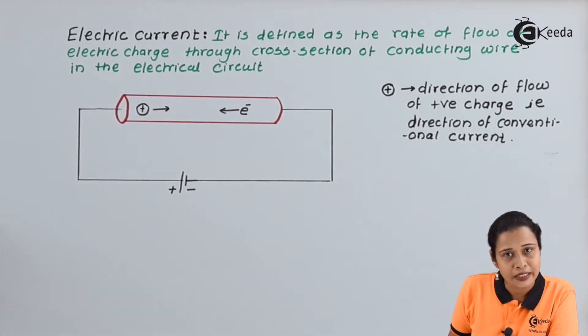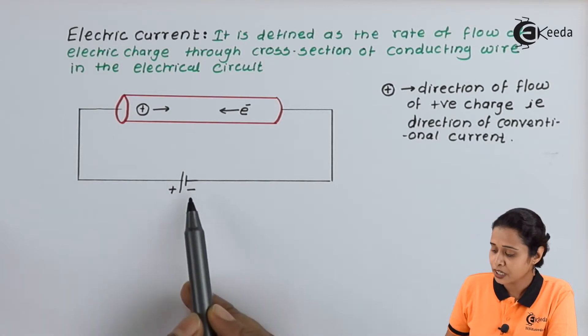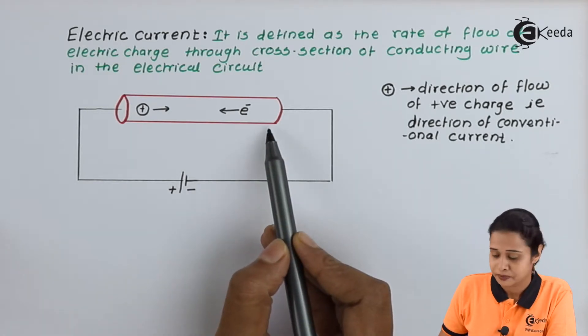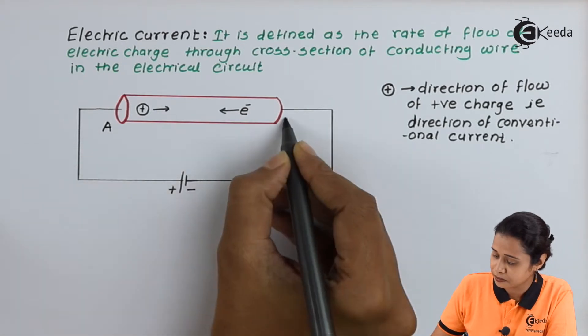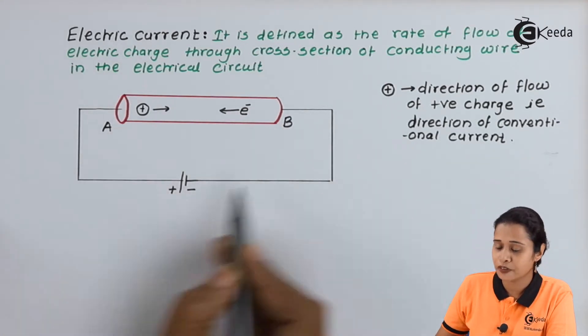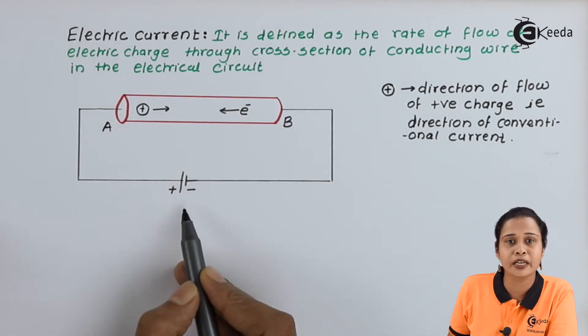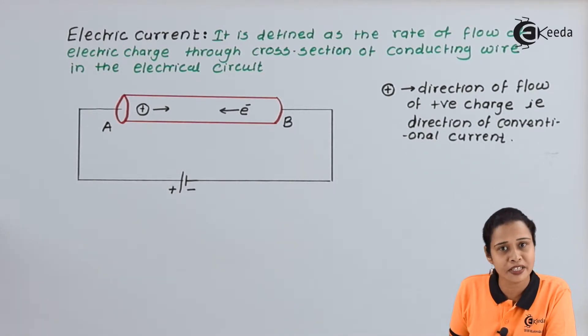Let us consider one electric circuit. Here we have a conductor. We can say conductor AB. This is outer wire. And here we are applying external power supply that can be considered as a battery.